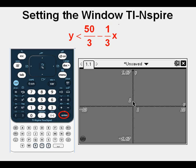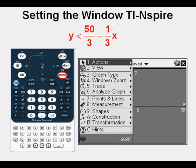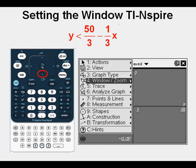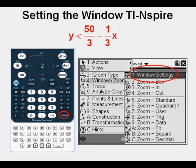To change the window settings in the most traditional manner, we press the menu key. We can click down to option 4 window slash zoom. Press enter. We see window settings plus all the zoom options.